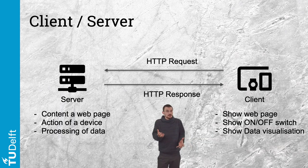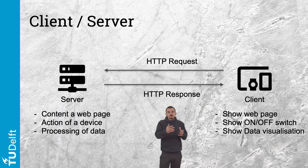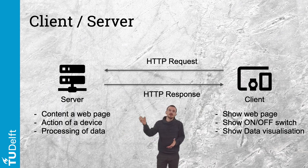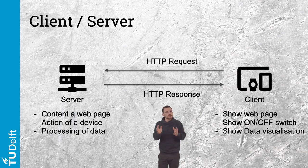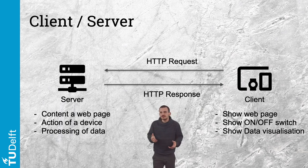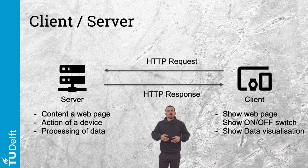So with the URL, the method, the header, and the body, we achieve a complete interaction between a client and a server through an HTTP request and response. In this communication model, the client has to pull information from the server. Anything happening on the server will not be reflected on the client without actively sending a new HTTP request — there is no standard way for the server to send messages to the client proactively.